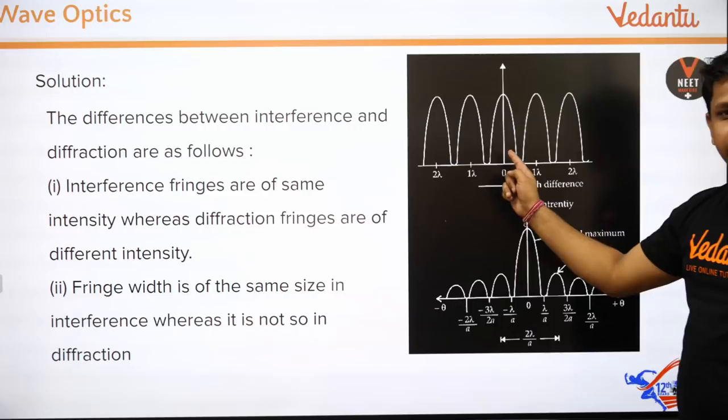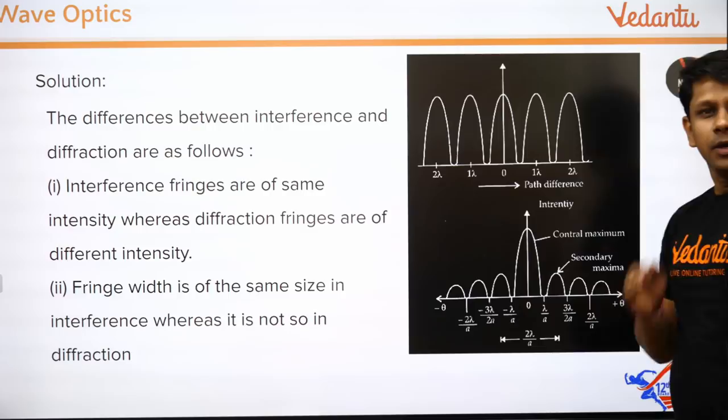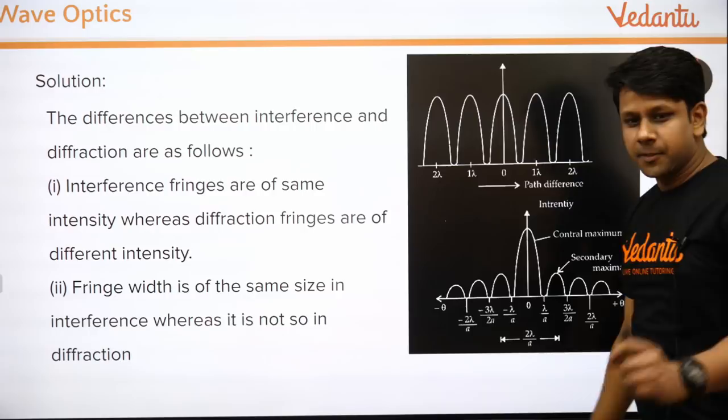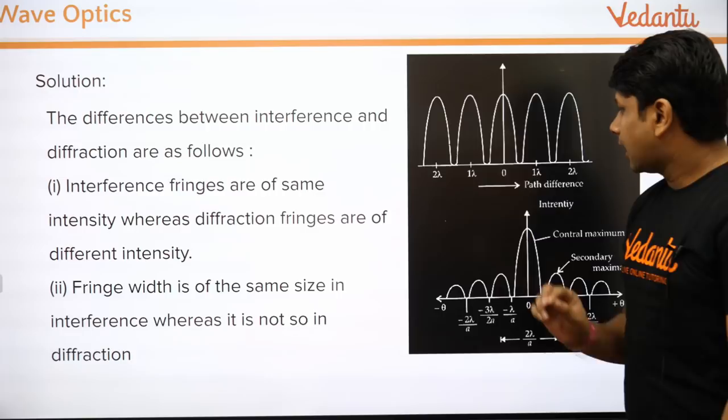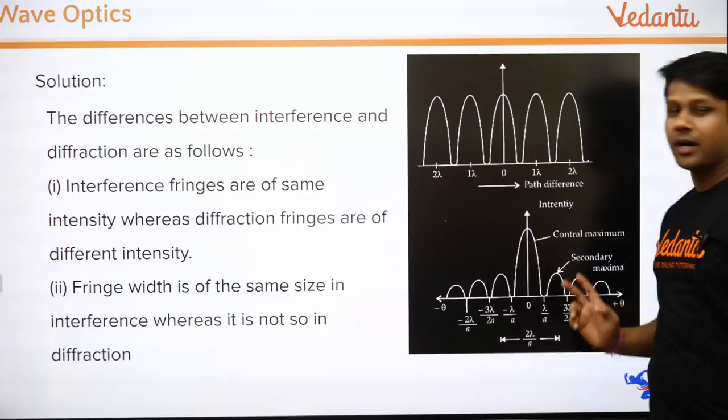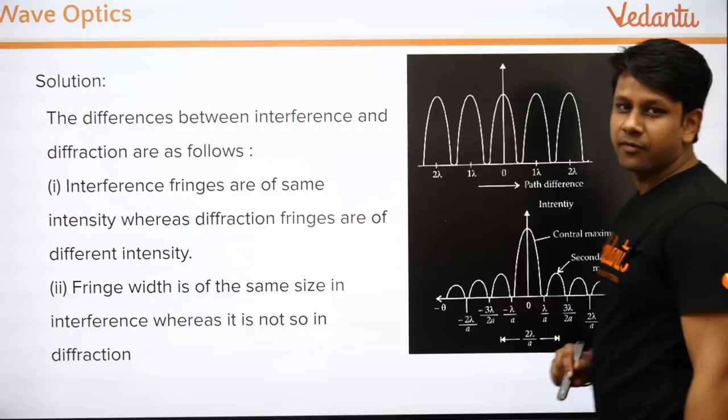In the interference pattern (YDSE), the intensity of all maxima remains the same and the fringe width is constant — meaning the distance between any two consecutive maxima is equal. In the diffraction pattern, the intensity decreases as you move away from the central maximum, and the fringe width varies. So the key differences are: uniform intensity vs. decreasing intensity, and constant fringe width vs. variable fringe width.